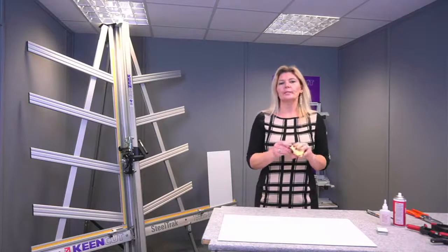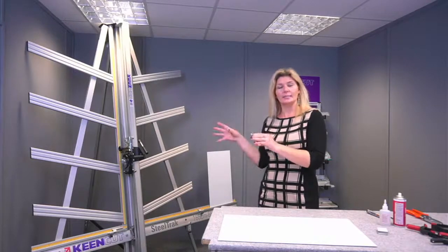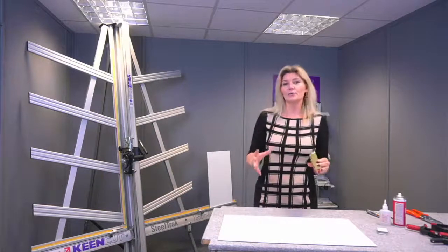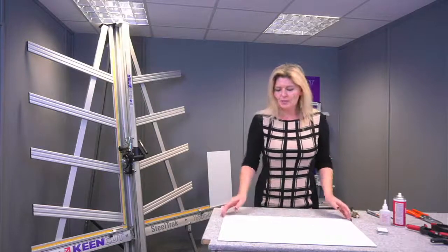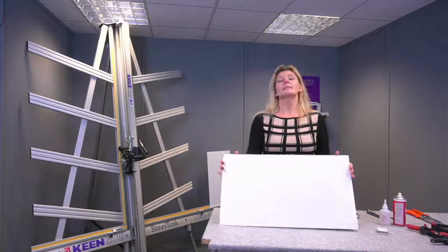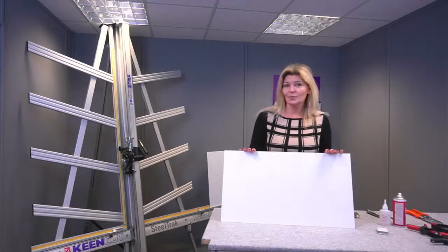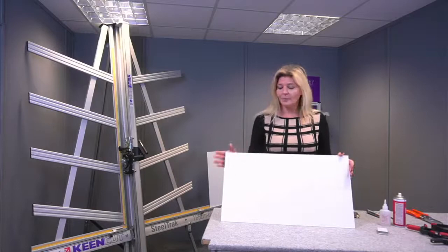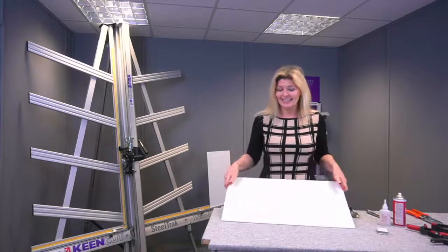Now the KeenCut V-grooving tool is an optional extra for the KeenCut steel track. So it goes on the steel track and this will help you make the grooves in the board to do the sign tray. You will also be requiring a pre-cut piece of aluminium composite paneling. You may know this as Dye Bond or Alupanol. I'm going to be referring to this as ACP throughout the session to make things easier.